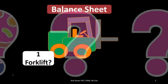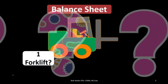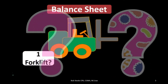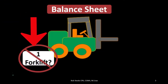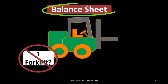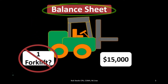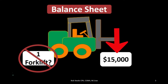The first question is: how are we going to record this forklift on the balance sheet? Will we put it on the balance sheet as one forklift? Obviously we can't do that — we have to put it on the balance sheet in terms of dollars. In this case we purchased the forklift for $15,000, therefore we're going to put it on the books at $15,000.